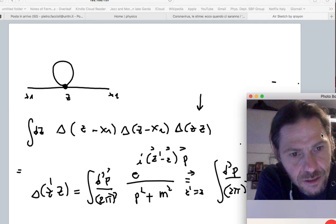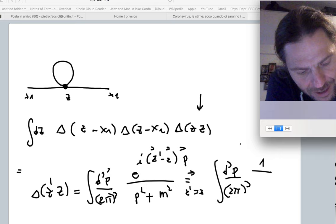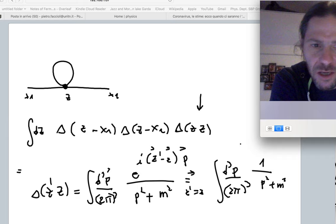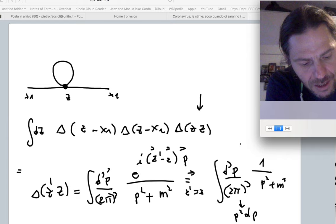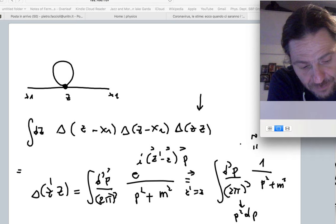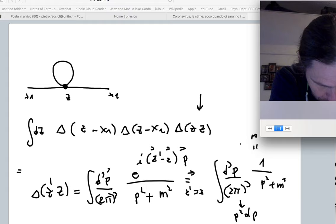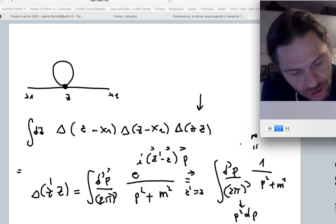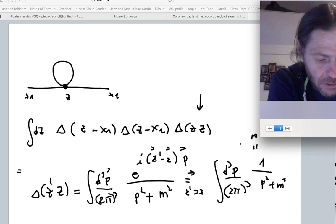Integral over d³p over (2π)³, and then I get 1 divided by p² + m². And you immediately see that this integral cannot be convergent because this guy will go like p² dp, so I'll get a p² in the numerator, p² in the denominator, and an integral over zero to infinity in spherical coordinates. This beast is clearly divergent.